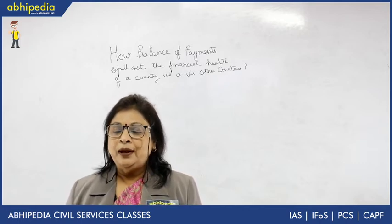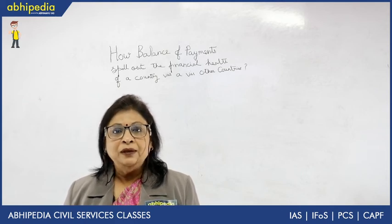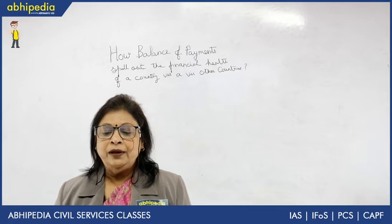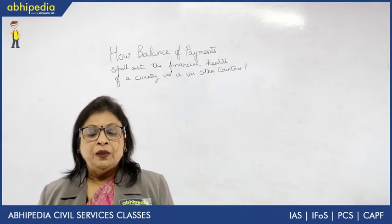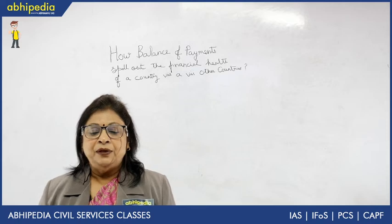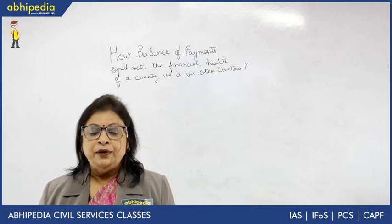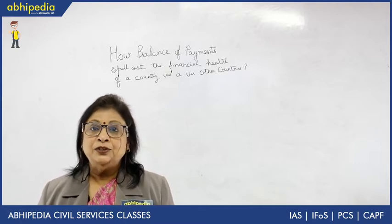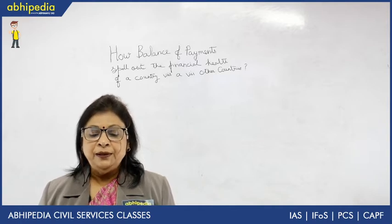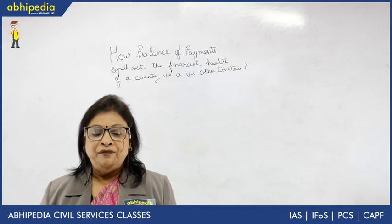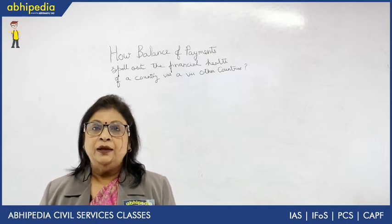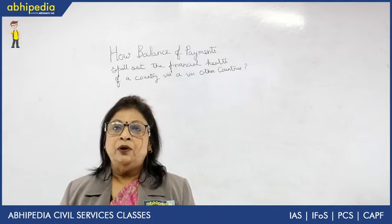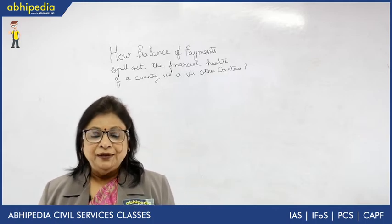Secondly, balance of payment gives a pictogram of the economic changes that a country is having over many years. Thirdly, it is also an indicator of foreign dependency. It provides knowledge of foreign receipts and foreign payments, knowledge of foreign investment, and is also an indicator of foreign trade. A country can formulate foreign trade policy accordingly. It also helps in national planning and the formulation of national policy, and it is helpful in fundamental and structural changes introduced in economic policies by the government. It is also useful for international organizations such as the International Monetary Fund, World Bank, etc.